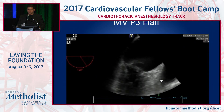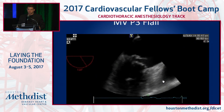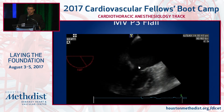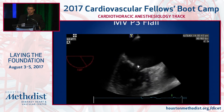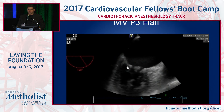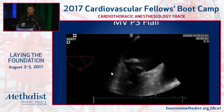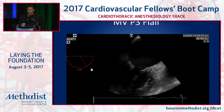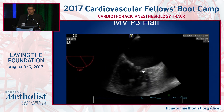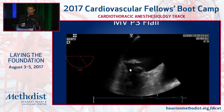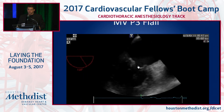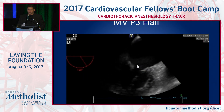A P3 flail this time. Remember the difference between flail and prolapse? You have a piece of the edge of the mitral leaflet, including a chorda tendinea, going above the annular plane. You're looking at a long axis view of the mitral valve here at around 120–130 degrees. You can see the anterior mitral valve leaflet here, the posterior mitral valve leaflet here. This is a P3 prolapse right there.